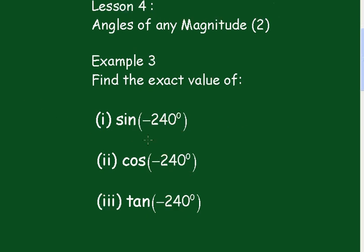On we go with Example 3. The sine of minus 240 is going to be equal to minus the sine of 240. 240 degrees is in the third quadrant, so the sine will be negative in the third quadrant, so this changes that to positive. So it's going to be the sine of 60 degrees, which of course is root 3 over 2.